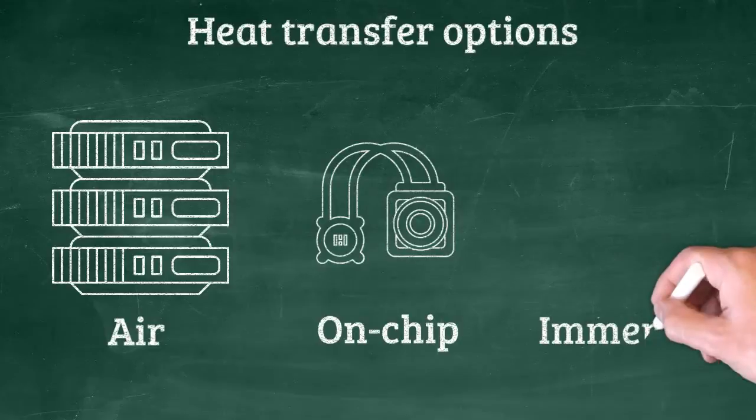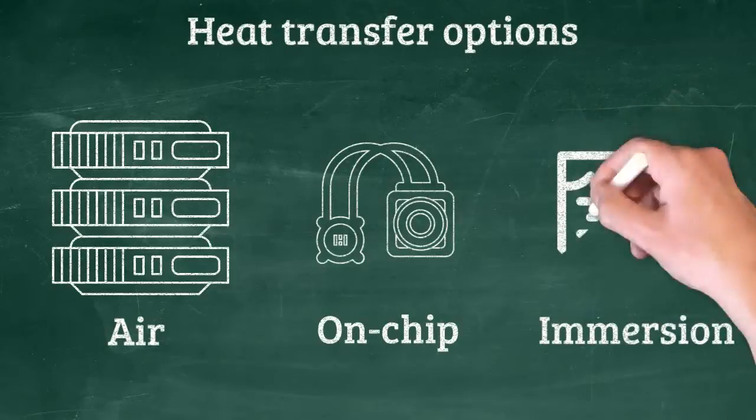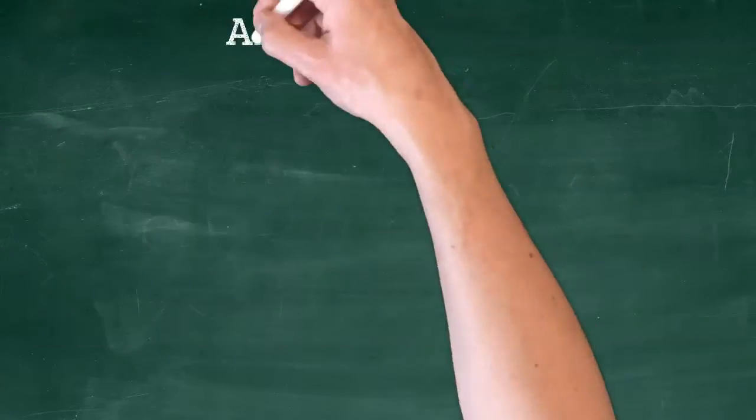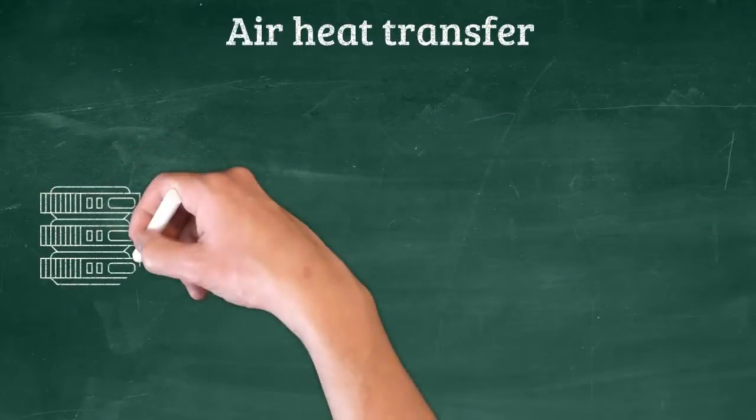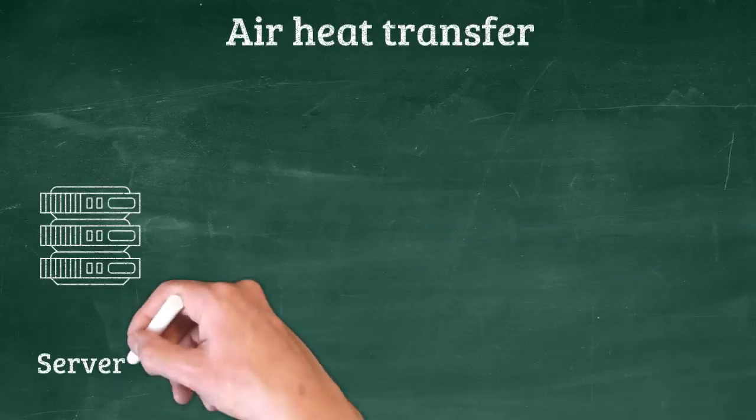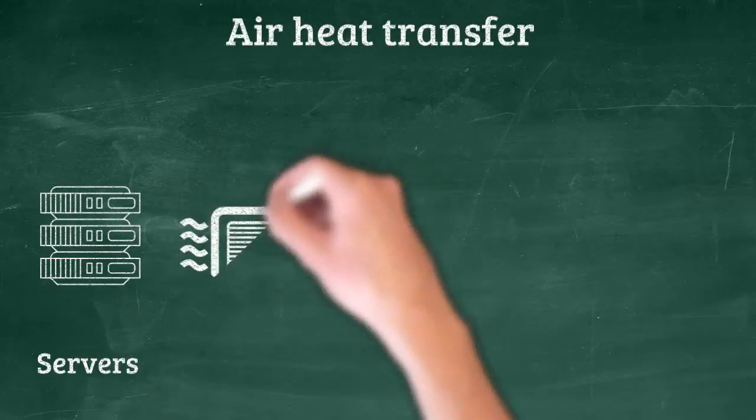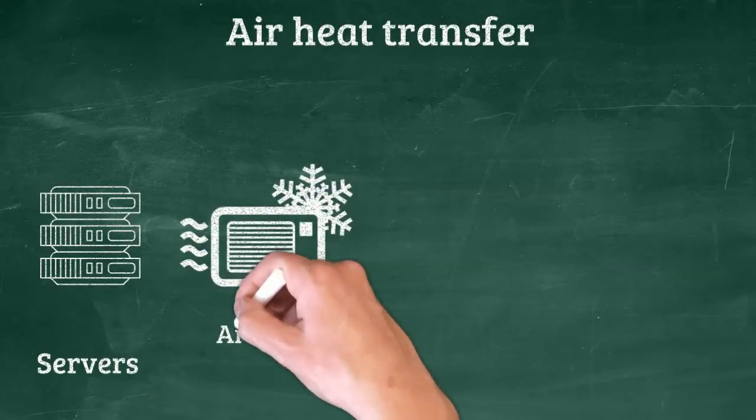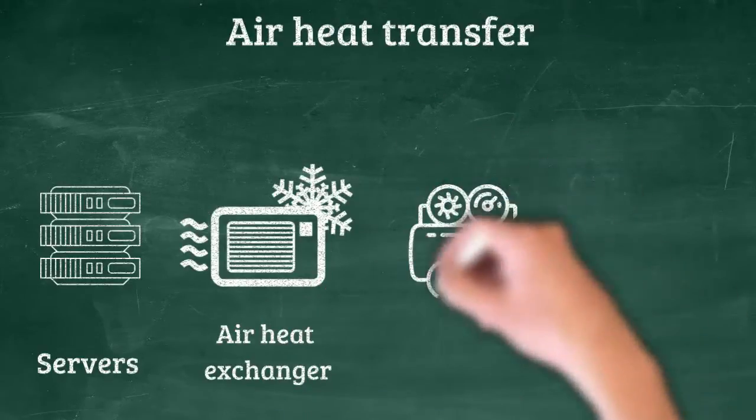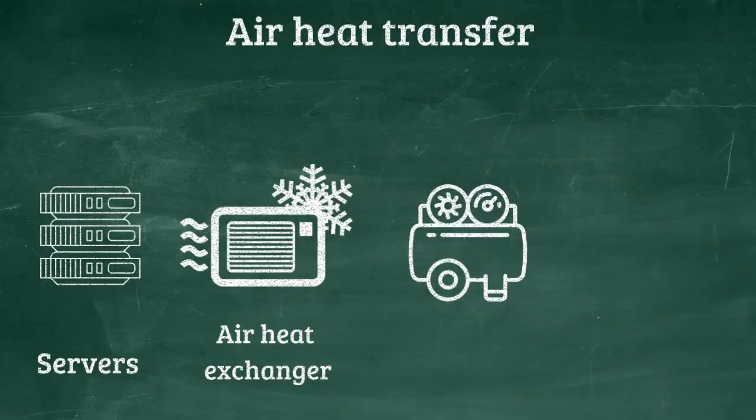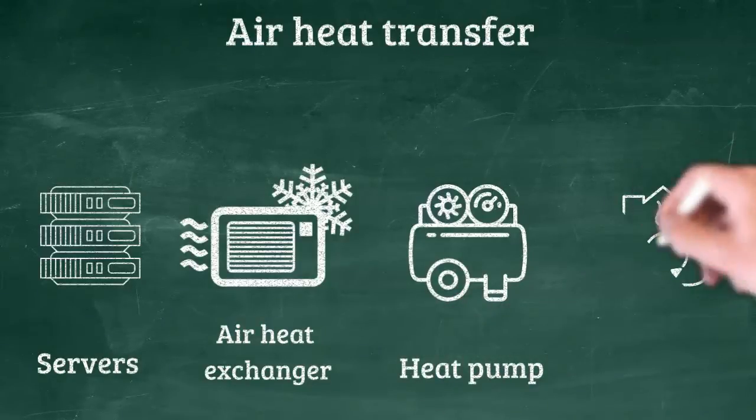In air heat transfer, server fans heat up the air till 30-40 degrees, and after air heat exchangers produce liquid with temperature 12-30 degrees, which is not warm enough for users. For that reason we need heat pumps which rise up the temperature of the liquid till 60-80 degrees, and after delivery to the buildings and residential areas.